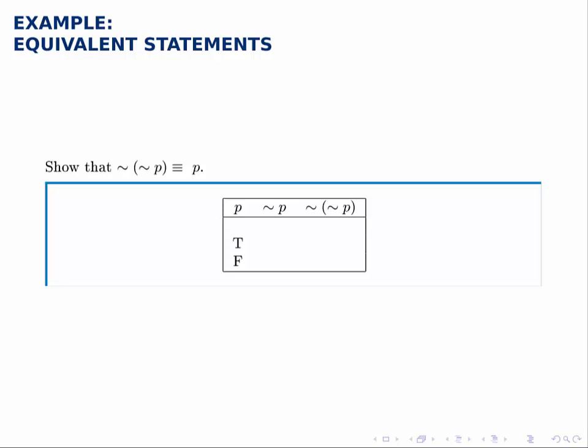To show that two statements are equivalent, what we do is we build a truth table where we have a column for each statement that we're trying to compare, and then if those columns are identical, the two statements are equivalent.